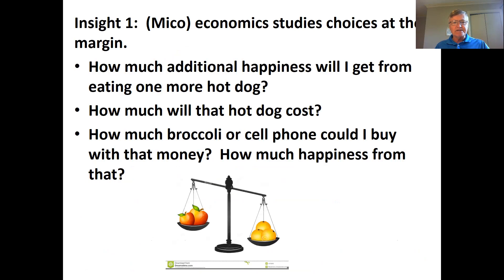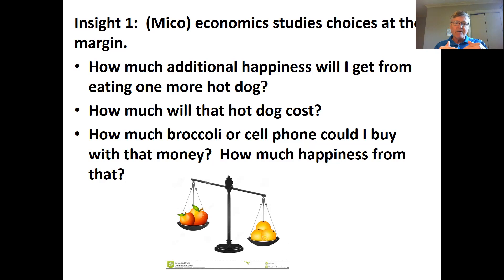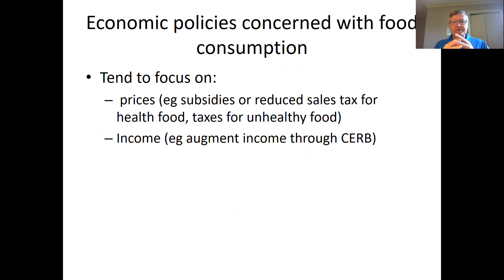Two last things: the insight we get from this is that economics is about what happens at the margin. We think about marginal change — if we have a slightly higher price, how does it affect us? If we have a little more income, where will we spend it? If I eat more and more hot dogs, what will it cost me in money, and also in terms of broccoli or cell phone coverage I could have bought instead? Economic policies therefore tend to focus on prices and income as the fundamental elements of the food budget.